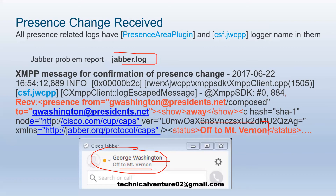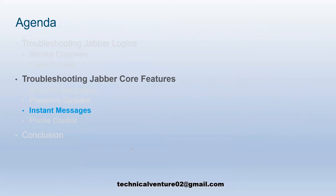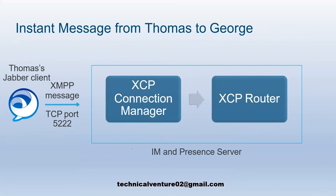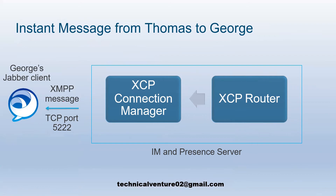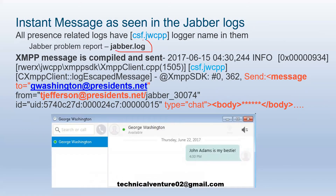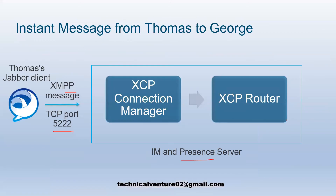For instant messaging, Thomas sends an XMPP message through TCP to the IMP presence server, and in response an XMPP message is sent back to George. In the jabber.log file, you can see the XMPP message compiled and sent — for example, a message to george@presidents.net from t.jefferson, with the body text 'John Adams is my best' — confirming the message Thomas sent to George.